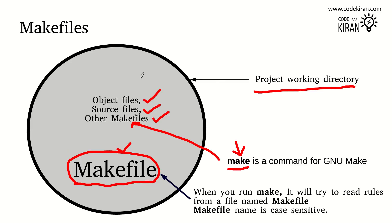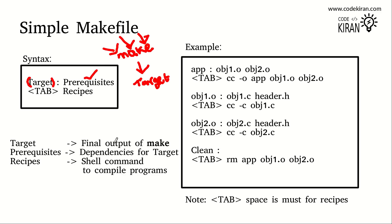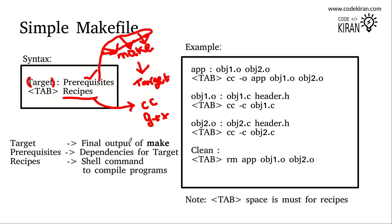The syntax of a simple makefile consists of three parts: target, prerequisites, and recipe. The target is the final output product — make will combine all the object files and generate a single target. You can name the target anything. Prerequisites are the dependencies. The recipe is a shell command used to compile; for C language it is 'cc' or 'gcc', for C++ it is 'g++', with their respective flags and files.